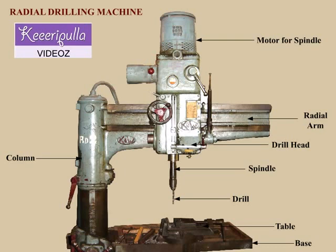These three movements, when combined together, permit the drill head to be located at any desired point on a large workpiece to produce the hole. When several holes are drilled on a single workpiece, the position of the radial arm and the drill head is adjusted so that the spindle may be moved from one position to another after drilling each hole without altering the setting of the work. This explains the versatility of the radial drilling machine.